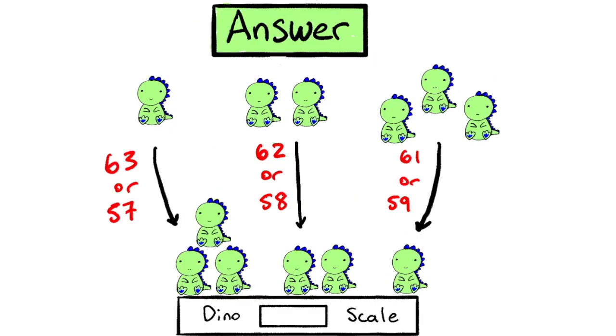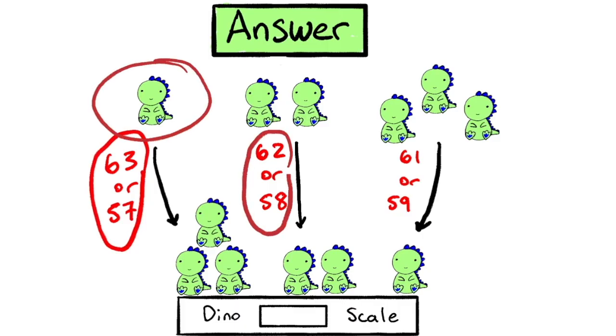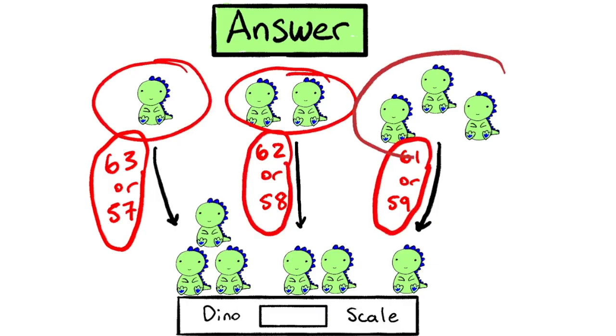So our final solution is to weigh a different number of dinosaurs from each family. And if we get 63 or 57, we know the fake family is this one. If we get a 62 or a 58, the fake family is this one. If we get a 61 or a 59, the fake family is this one.